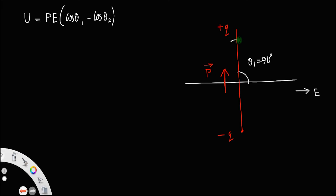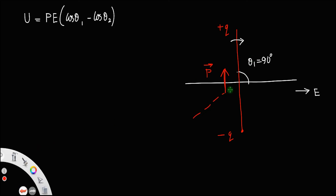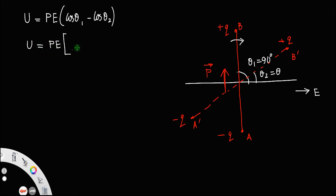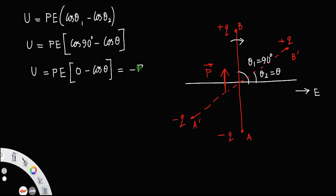We rotate the dipole through an angle theta to a new position — plus q comes to A dash and minus q goes to B dash — and let θ₂ = θ. Substituting these values, the potential energy U = pE(cos90° − cosθ). The value of cos90° is 0, so this gives U = pE(0 − cosθ) = −pE cosθ.